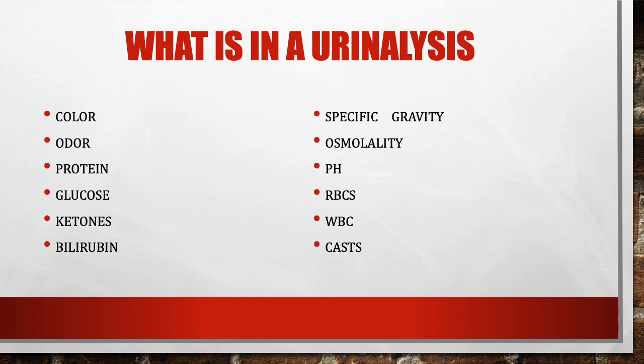Red blood cells can be present for several reasons: poor kidney filtration, trauma, or a urinary tract infection. White blood cells are a sign of infection. Casts are particularly significant — they are actual particles of kidney tissue released into the urine. Their presence is a red flag indicating kidney damage and possible progression toward kidney failure.